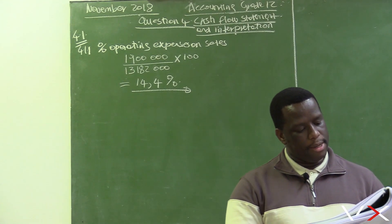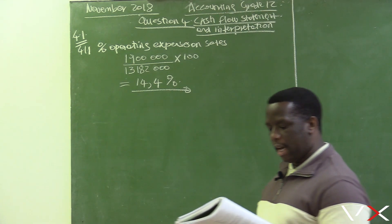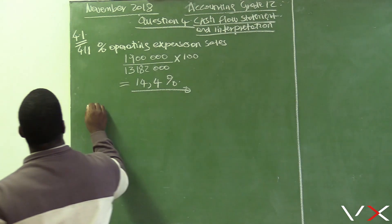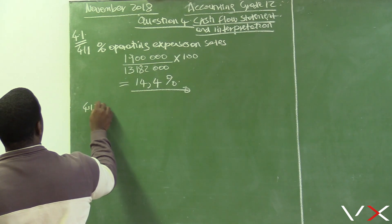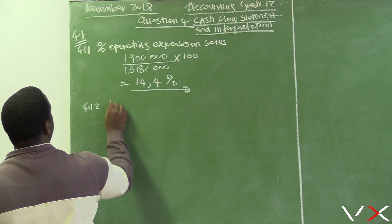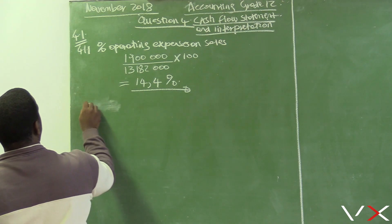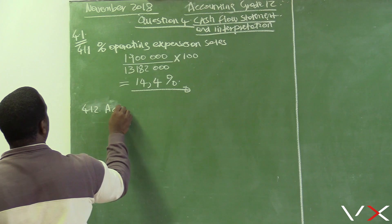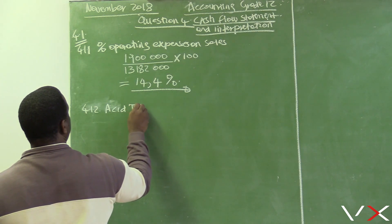Next is 4.1.2 - the Asset Test Ratio. We want to calculate the asset test ratio, which assesses whether the business can still pay its current liabilities if it cannot sell its stock.